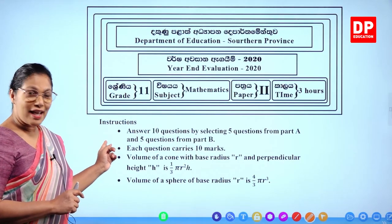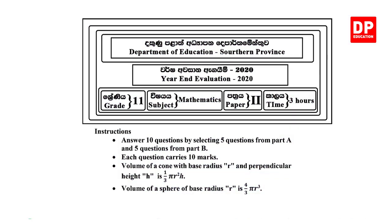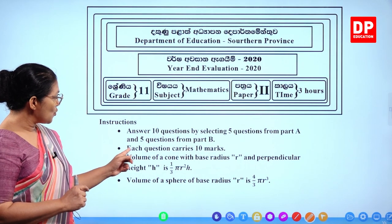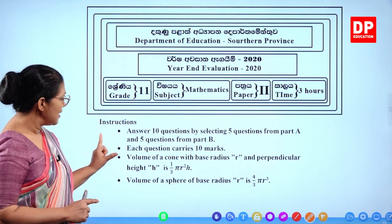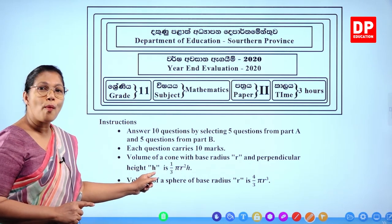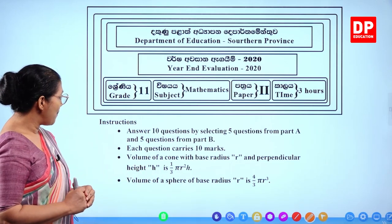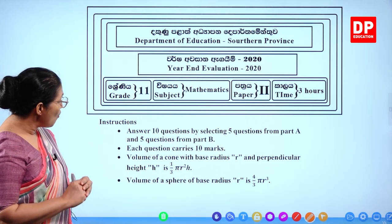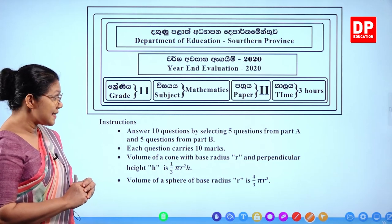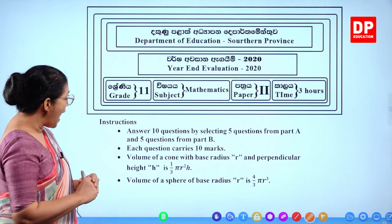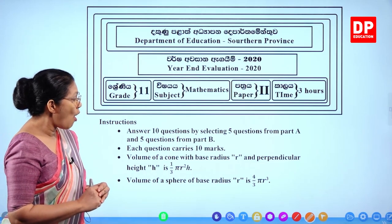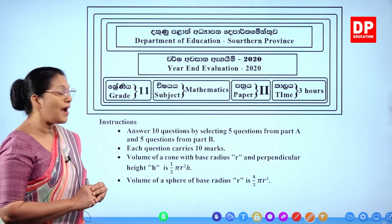Let's do Paper 2 and look at the instructions. You get 10 questions: 5 questions from Part A and 5 questions from Part B. Each question carries 10 marks. Two formulas are given in the paper, so you don't have to memorize anything: volume of a cone with base radius r and perpendicular height h is (1/3)πr²h, and volume of a sphere with radius r is (4/3)πr³.